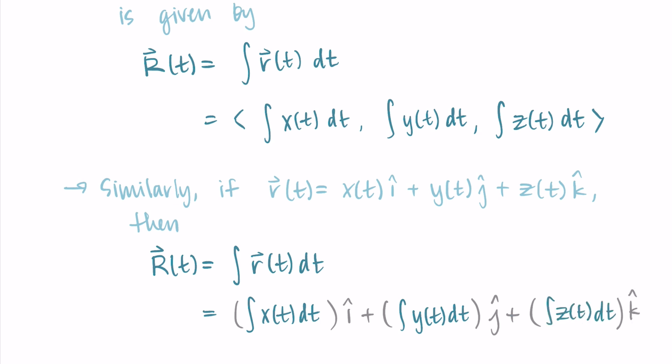One unique thing with antiderivatives is the plus C constant for a general antiderivative. This makes antiderivatives a little more nuanced, and I'll talk about that through the examples — you'll also see it more in further videos.